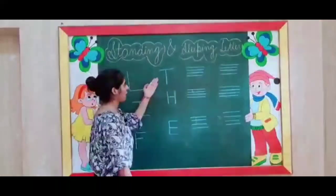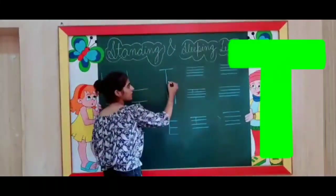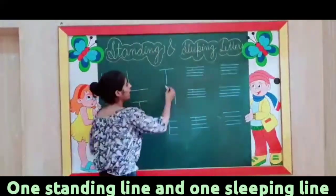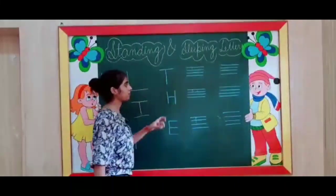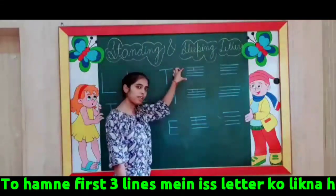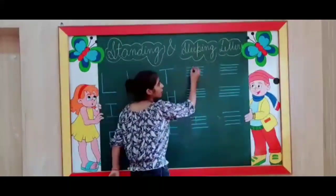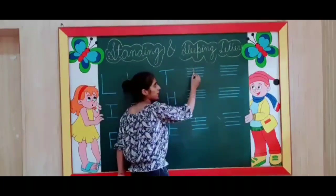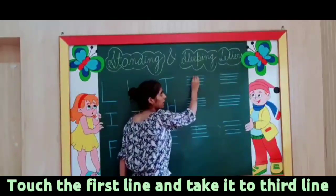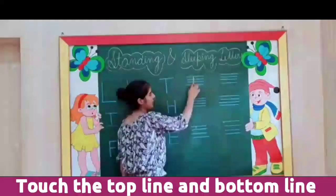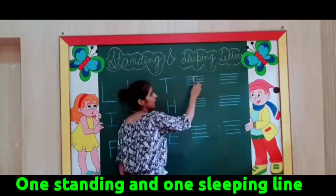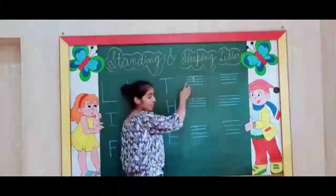Next letter we have is T — T with one standing line. The sleeping line is on the top of the standing line. If our notebook has four lines, we have to write within the first three lines. Touch on the first line, write to the third line — top line go and bottom line go — like this. This is the standing line and one sleeping line. This is letter T.